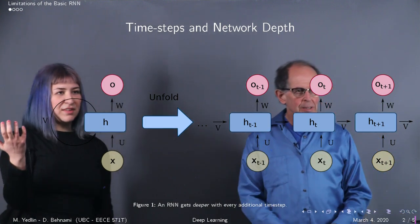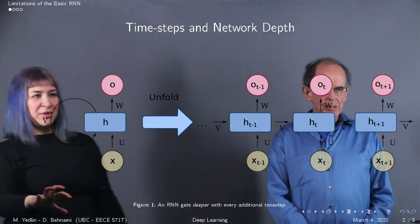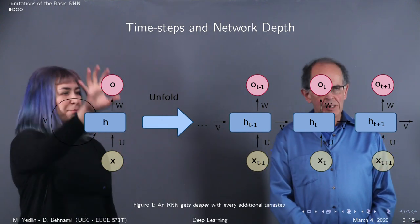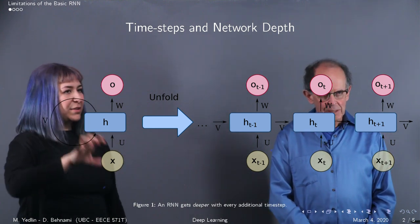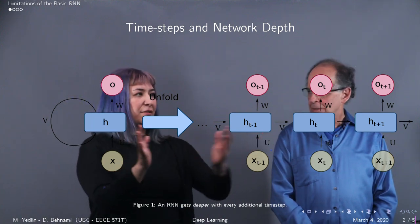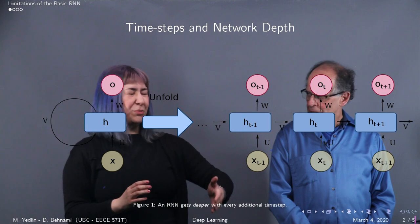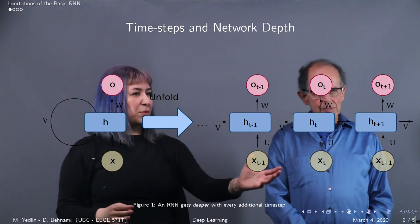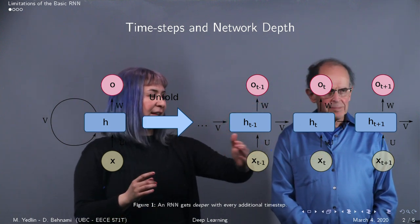So just a quick recap with RNNs. There's the folded, compact version, which is what you see here. Input, output, hidden state, a loop that goes back to the hidden state with a time delay. And the unraveled version, which essentially you can kind of think of as a multilayer perceptron, where each layer is a time step, and the weights are tied U, V, and W between all the layers.